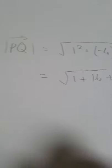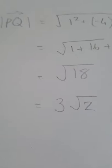For part B, the magnitude of PQ: it's the square root of 1 squared plus minus 4 squared plus 1 squared, which is the square root of 1 plus 16 plus 1, giving the square root of 18. We leave it as a simplified surd, which is 3 root 2.